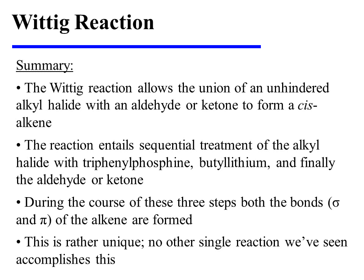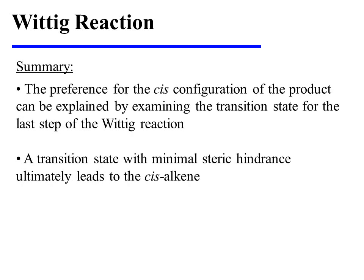In summary, the Wittig reaction allows the union of an unhindered alkyl halide with an aldehyde or ketone so as to form a cis-alkene product. The reaction entails sequential treatment of the alkyl halide with triphenylphosphine, butyllithium, and finally the aldehyde or ketone. During the course of these three steps, both the sigma and pi bonds of the alkene are formed — this is rather unique, as no other single reaction we've seen accomplishes this. The preference for the cis configuration can be explained by examining the transition state, where minimal steric hindrance ultimately leads to the cis-alkene.